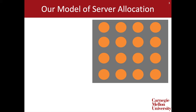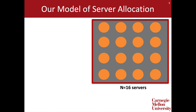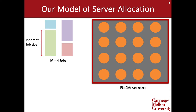For example, here we have a data center of n equals 16 servers, which is tasked with processing a set of n equals 4 jobs. Each job is assumed to have some inherent size — a job size tells us how long the job would take to complete if run on a single server. Job sizes are assumed to be known to the system, and all jobs are assumed to be present at time zero.